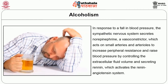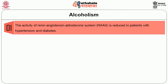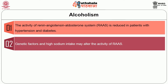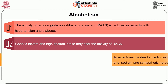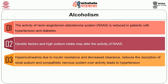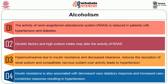The major regulators are the sympathetic nervous system for long-term control. In response to a fall in blood pressure, the sympathetic nervous system secretes norepinephrine, a vasoconstrictor which acts on the small arteries and arterioles and increases peripheral resistance, thus raising blood pressure by controlling the extracellular fluid volume and secreting renin, which activates the renin-angiotensin system. The activity of the renin-angiotensin-aldosterone system is reduced in patients with hypertension and diabetes. Hyperinsulinemia due to insulin resistance reduces renal sodium reabsorption, and sympathetic nervous system overactivity leads to hypertension. Insulin resistance is also associated with decreased vasodilatory response and increased vasoconstrictor response, resulting in hypertension.